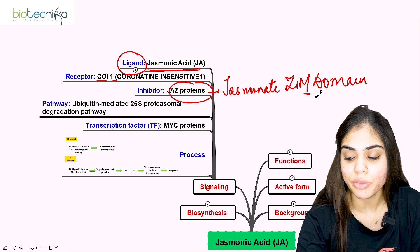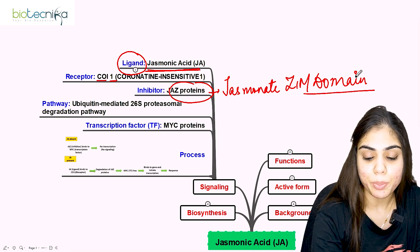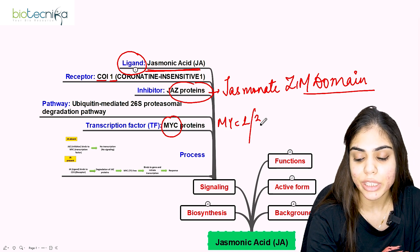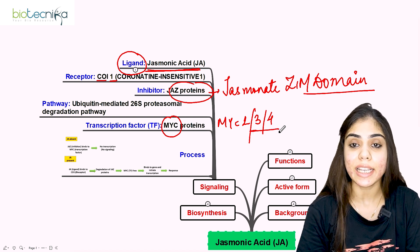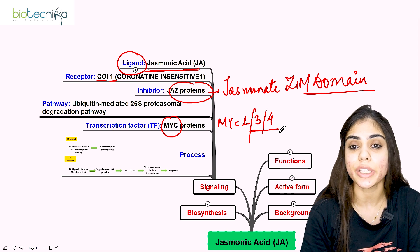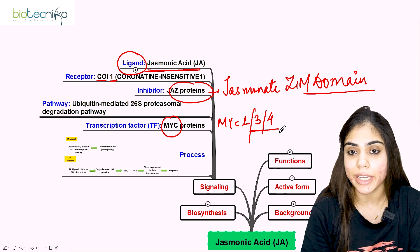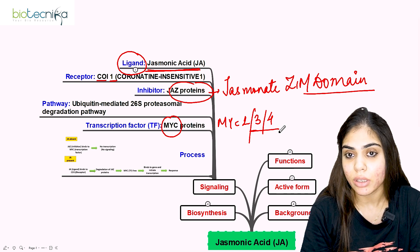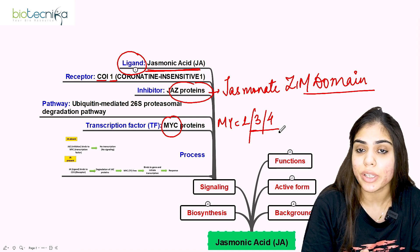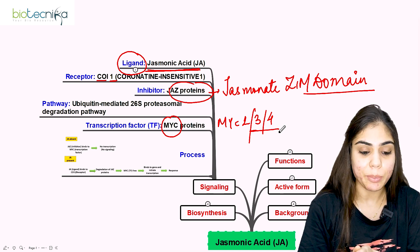The transcription factor responsible for jasmonic acid induced expression is MYC protein — specifically MYC2, MYC3, and MYC4. The signaling pathway operates via ubiquitin-mediated 26S proteasomal degradation. This pathway causes the destruction of the inhibitor JAZ when jasmonic acid is present, using the 26S proteasomal pathway.